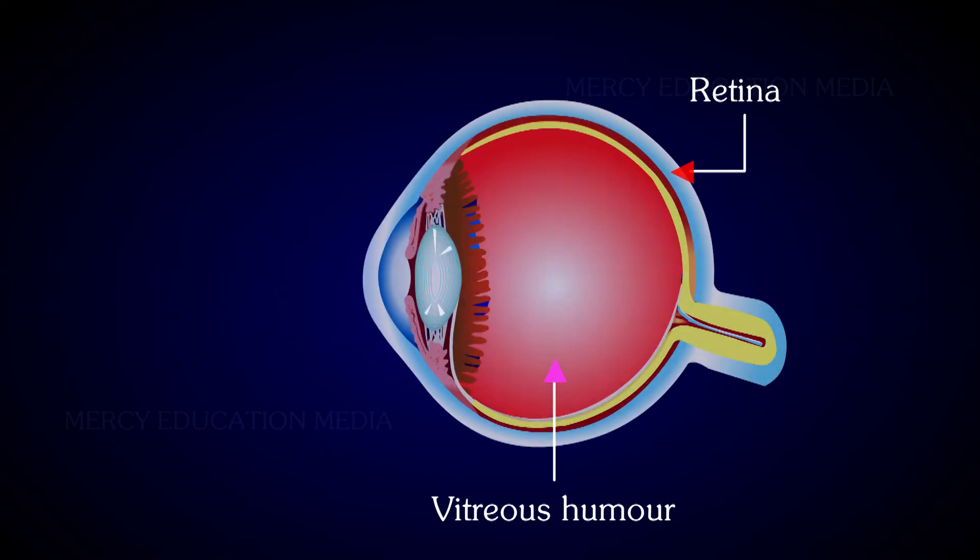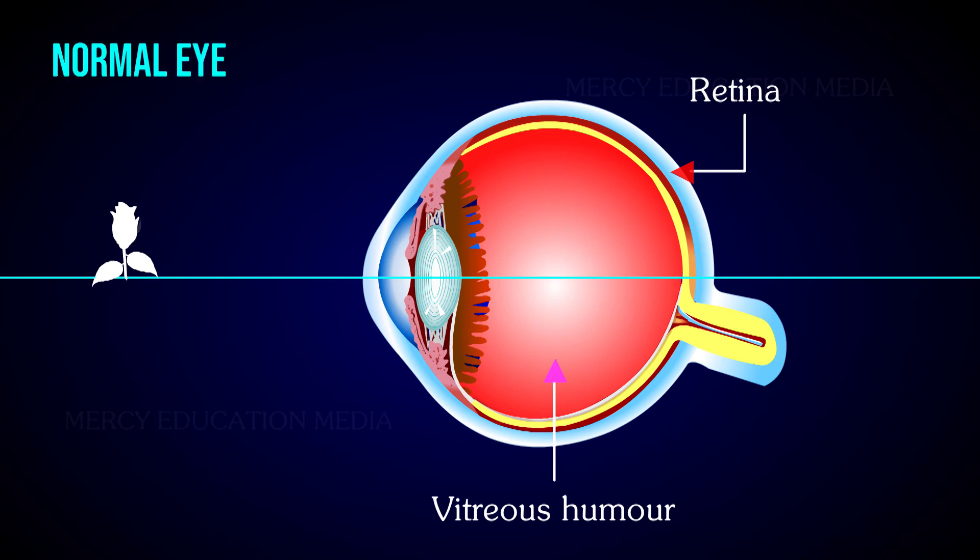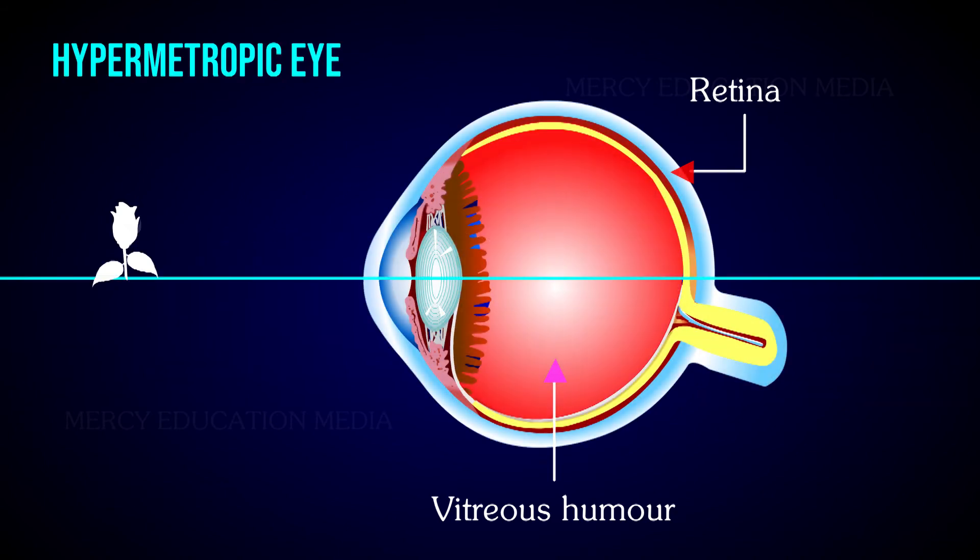Here you can see the formation of an image in a normal eye and in a hypermetropic eye. In the case of a normal eye, the rays of light from the flower fall on the eye and converge on the retina, whereas in the case of a hypermetropic eye, the light rays are focused behind the retina.